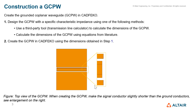We follow the same strategy: use the transmission line calculator to obtain the dimensions, and then create the structure in FEKO using the graphical interface. This gives us the top view of the grounded coplanar waveguide.